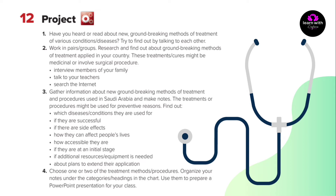How they can affect people's lives, how accessible they are, if they are at an initial stage, and if additional resources or equipment is needed, as well as plans to extend their application. اجمع المعلومات حول طرق العلاج والإجراءات الجديدة المتبعة في المملكة العربية السعودية وقم بتدوين الملاحظات. اكتشف: الأمراض والحالات التي يتم استخدام هذا العلاج من أجلها، إذا كان ناجحاً، إذا كان هناك آثار جانبية، كيف يؤثر على حياة الناس، مدى سهولة الوصول إليه، إذا كان في المرحلة الأولية، إذا كان هناك حاجة لموارد إضافية، وخطط توسيع نطاق التطبيق.